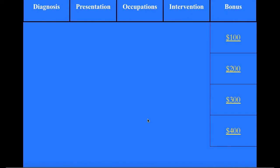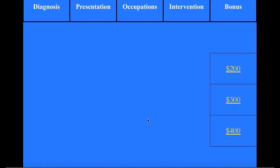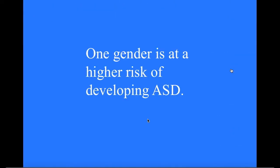Bonus for 100: State the prevalence of children in the U.S. diagnosed with ASD. What is one in 59 children in the U.S.? Bonus for 200: One gender is at a higher risk of developing ASD. What is a male to female ratio of three to one?